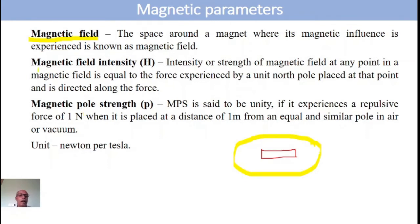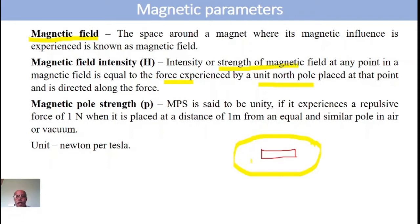Coming to the Magnetic Field Intensity. Magnetic Field Intensity is defined as the strength of the magnetic field at any point in this magnetic field if a unit North Pole experiences a force at that point. The strength of the magnetic field, otherwise known as intensity, at any point in this region is the force experienced by the unit North Pole at that particular point.